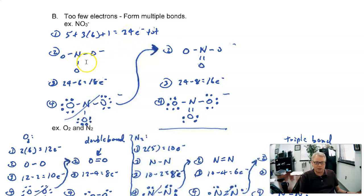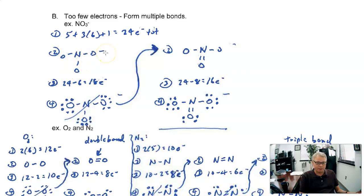In step 2, we draw our skeleton structure. The first atom in the formula is generally your central atom. Oxygens and hydrogens tend to be around the outside. So we put nitrogen in the middle and 3 oxygens around the outside. Now we subtract 2 electrons for each bond in our skeleton structure — we used up 6 — so 24 minus 6 gives us 18 electrons remaining.